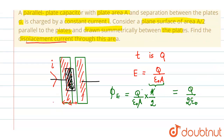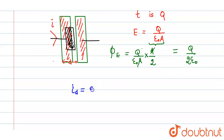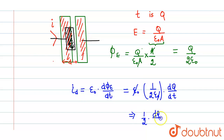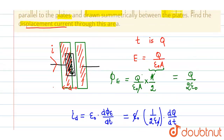The displacement current is given by i_d = epsilon naught times d(phi_e)/dt. Substituting, epsilon naught times (1/2 * epsilon naught) gives 1/2, and differentiating q with respect to t gives dq/dt. The epsilon naughts cancel, leaving i_d = (1/2) * dq/dt. Since the rate of change of charge equals current, the displacement current is i by 2, where i is the constant current charging the capacitor.